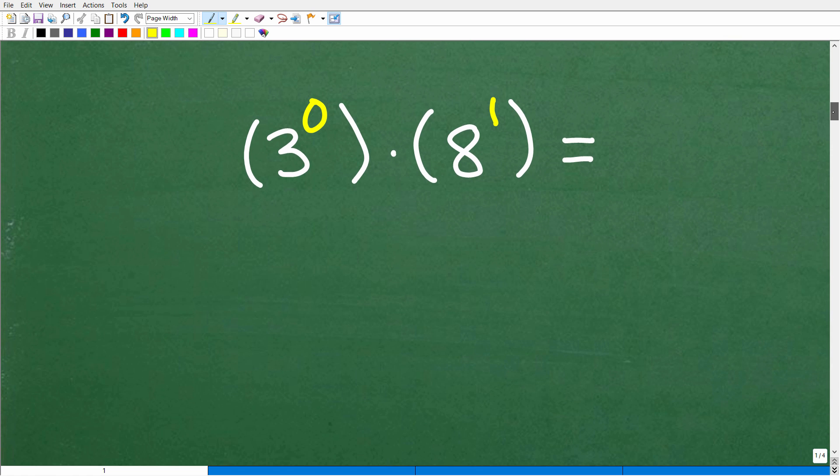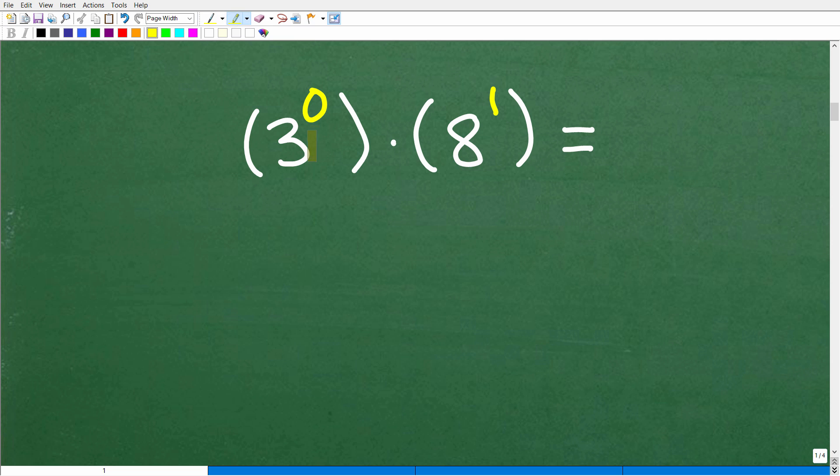Anything to the zero power is one. That is the key here. So anything to the zero power is one. In other words, X to the zero power is one. X, Y squared plus Z to the fifth, all of this to the zero power is one. In algebra and dealing with numbers, anything to the zero power is one. That is something you need to remember.